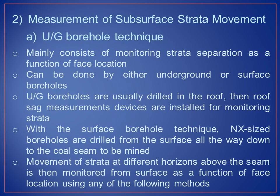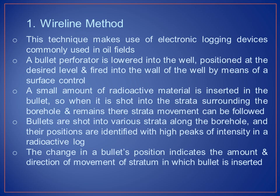Measurement of subsurface strata movement: the first technique is the underground borehole technique, which mainly consists of monitoring strata separation as a function of face location. This can be done by either underground or surface boreholes. Underground boreholes are usually drilled in the roof, then roof sag measurement devices are installed for monitoring strata. With the surface borehole technique, NX-sized boreholes are drilled from the surface all the way down to the coal seams to be mined, and movement of strata at different horizons is monitored using the following methods: first, the wireline method.